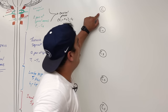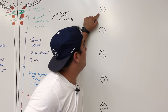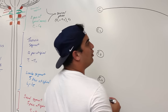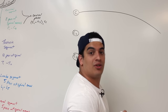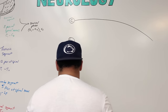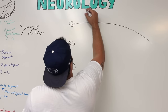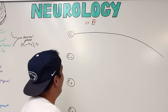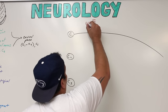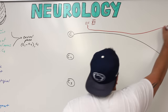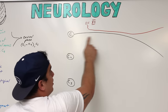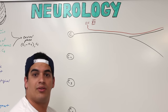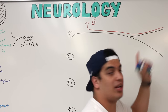C1 comes out between the atlas and the occipital condyles and gives off two branches. One branch forms the superior root of the ansa cervicalis. The other branch moves with the hypoglossal nerve — cranial nerve 12 — which comes through the hypoglossal canal. As the hypoglossal nerve traverses this region, it picks up a branch from C1, and they run together.